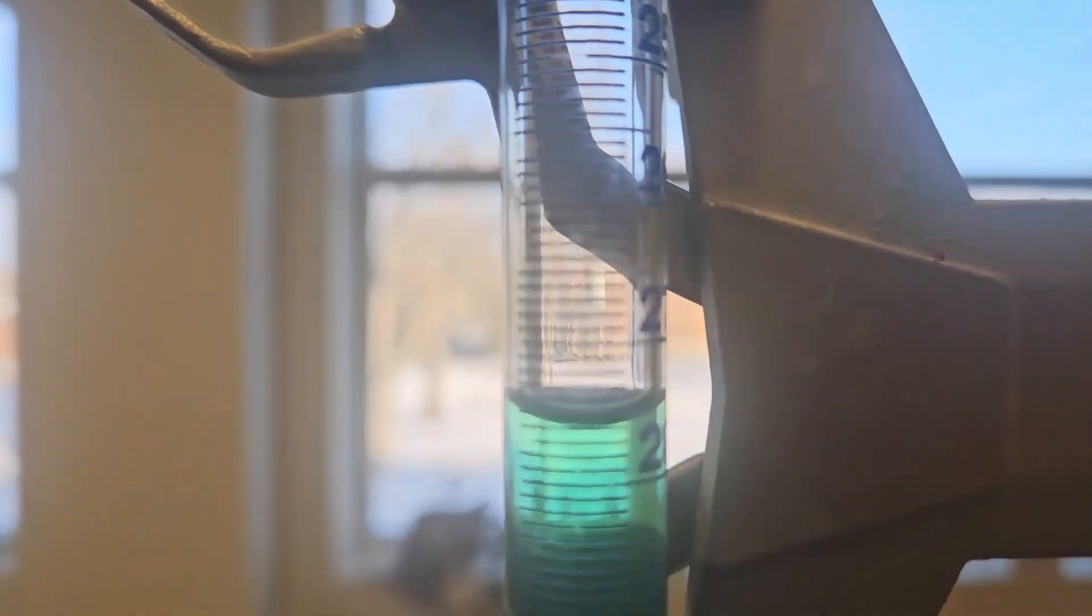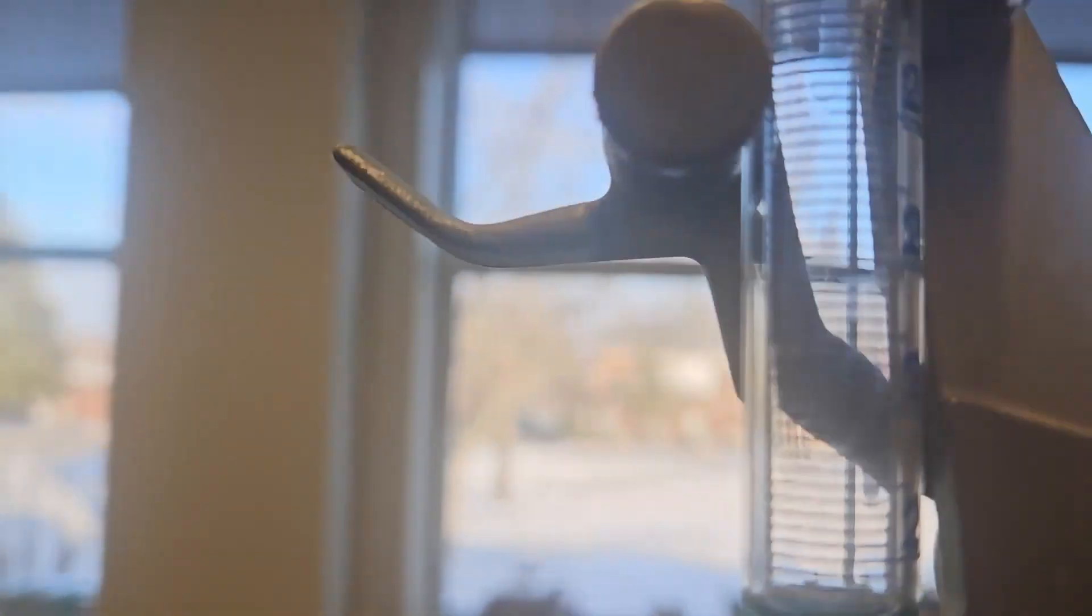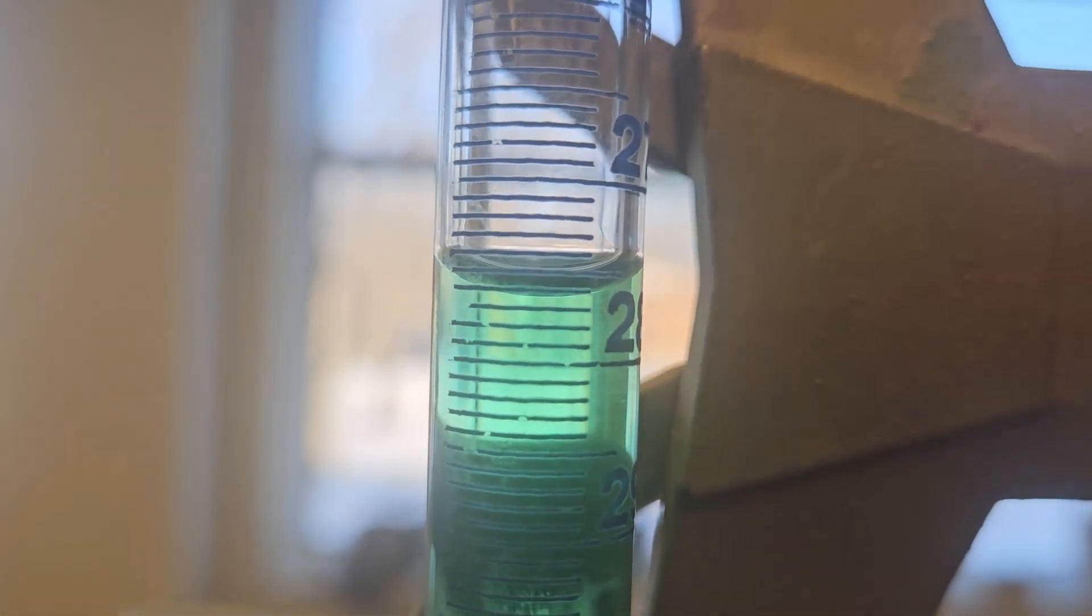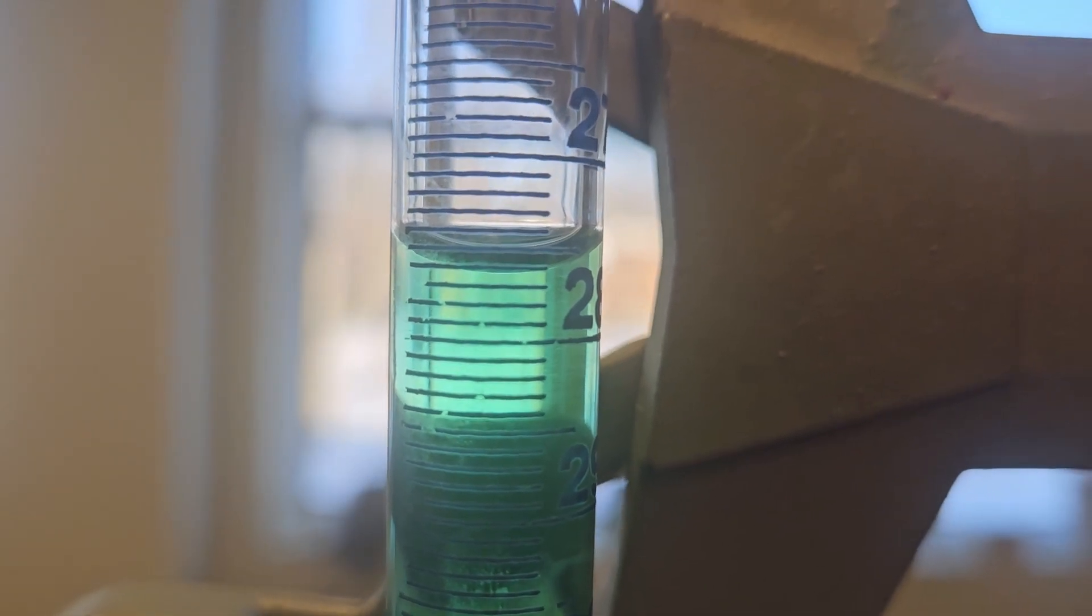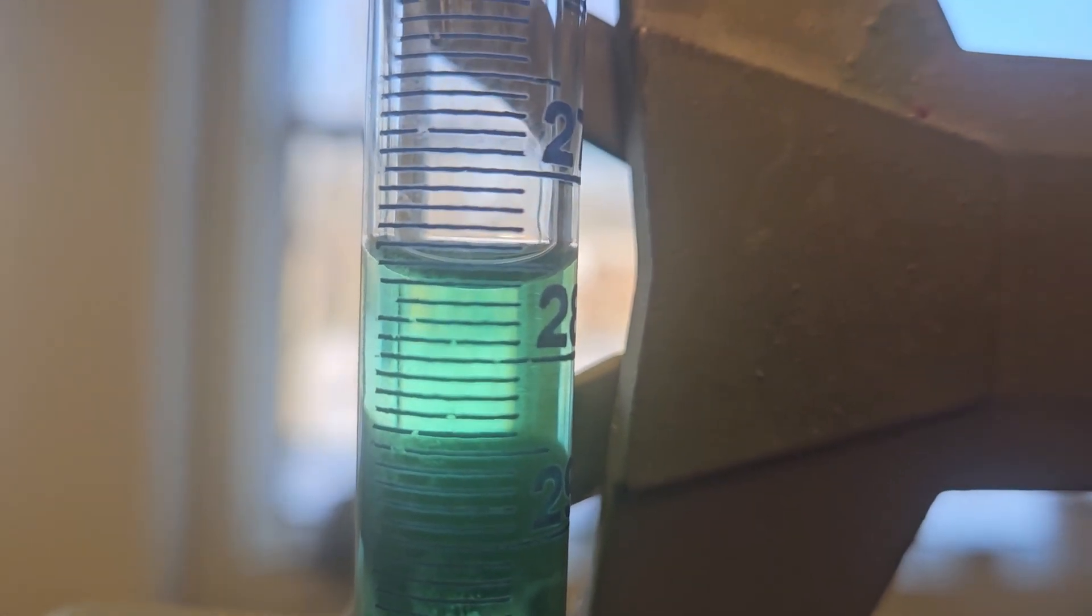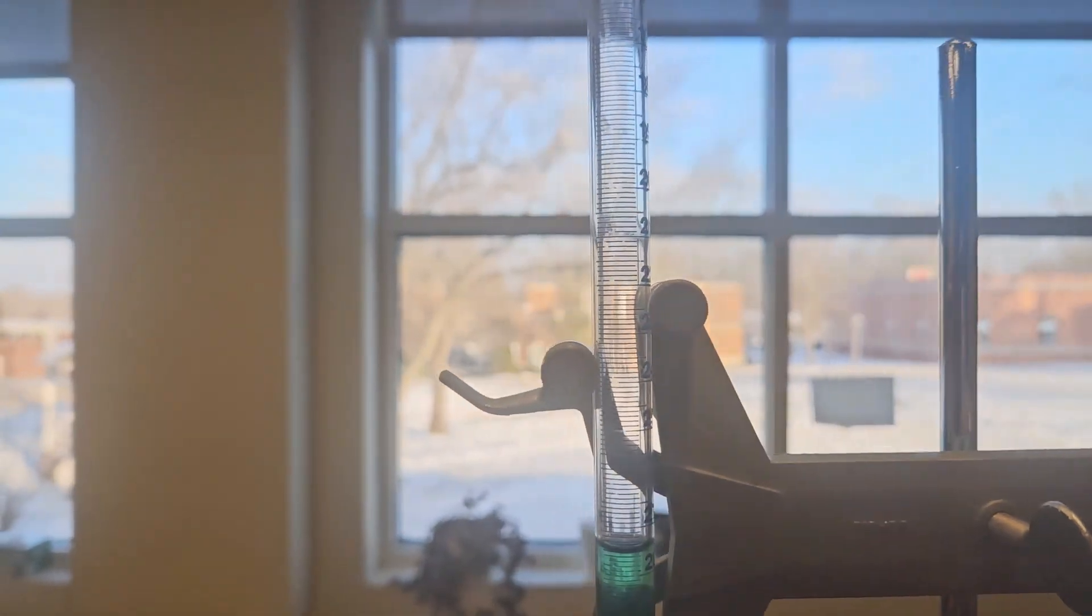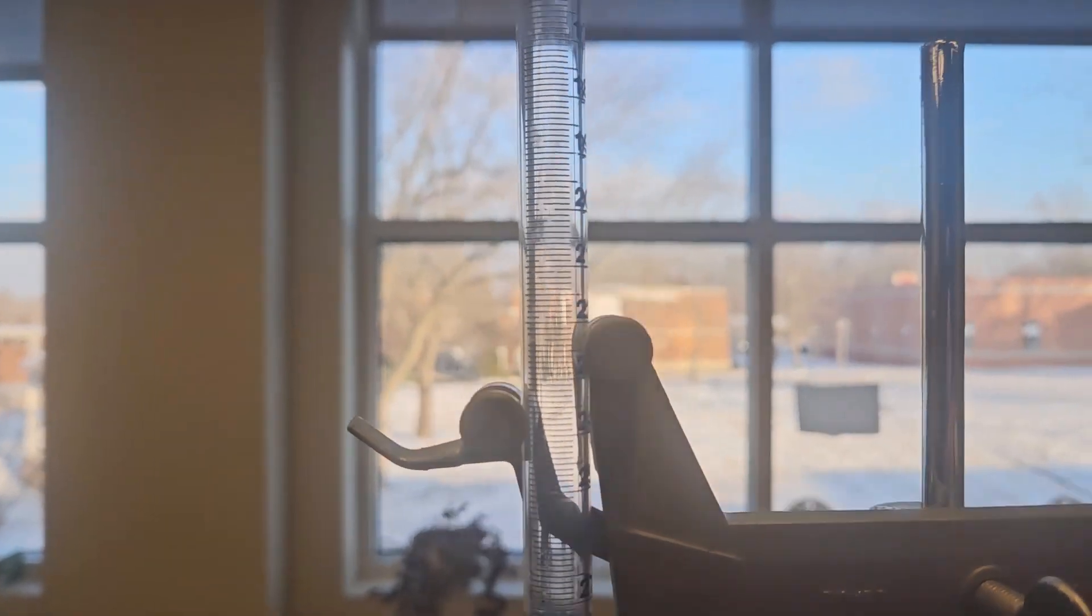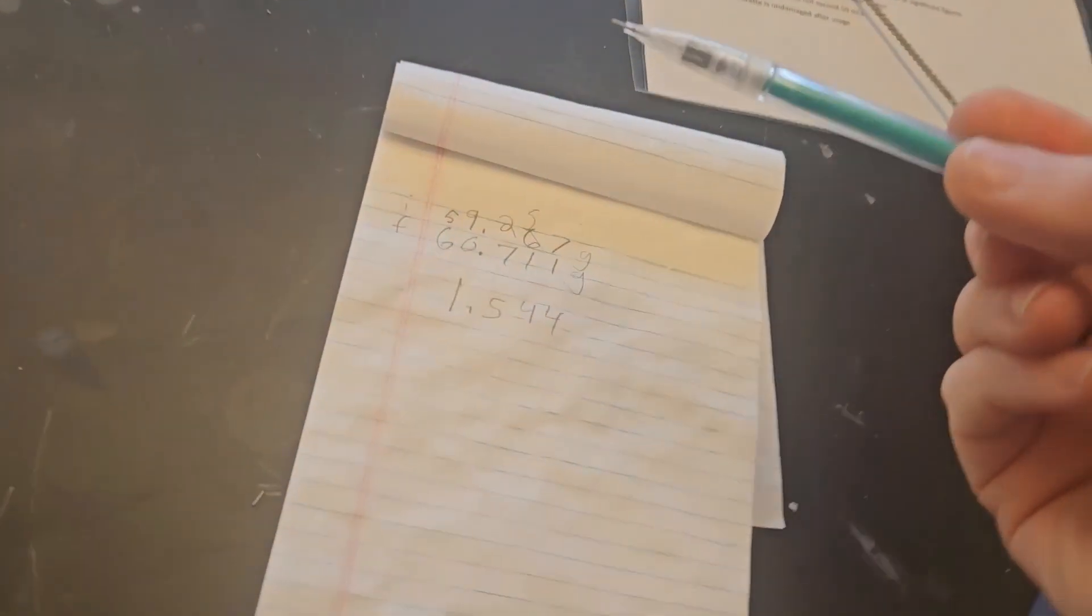The volume is not 28 mils and some change, it is 27 and some change. So looking at this very carefully, we're looking at the bottom of the meniscus. So reading there, that's 28, so 27.9, 27.8, 27.6, about 27.5, a little higher than 27.5, so it's somewhere between 27.5 and 27.4.